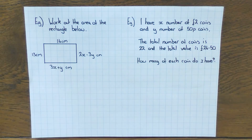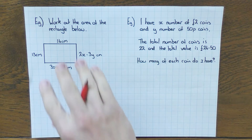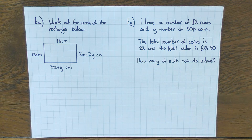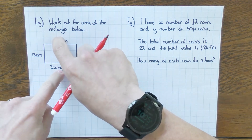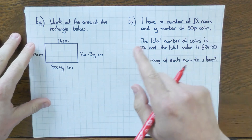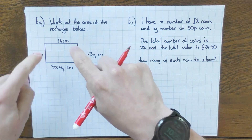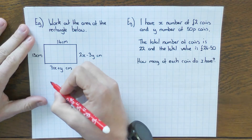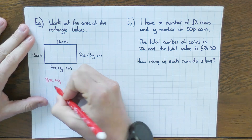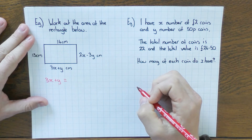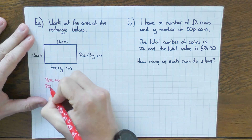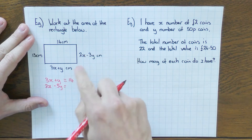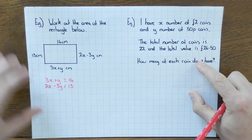The other type of question they could ask involves a diagram — like a rectangle, or possibly an equilateral triangle. The method is still the same: form two equations. In a rectangle, opposite sides are equal. So I form the first equation: 3x plus y equals 14 — those two sides are the same. The second equation: 2x minus 3y equals 13 — those two sides are the same. There are your two equations.